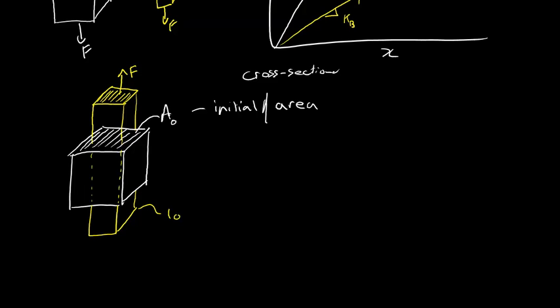But this is longer now and narrower. But what we're concerned with at this point is this initial cross-sectional area. Before, we had a load on it. If we take that and use that, put that in the denominator below the force, we can define this thing called the stress.